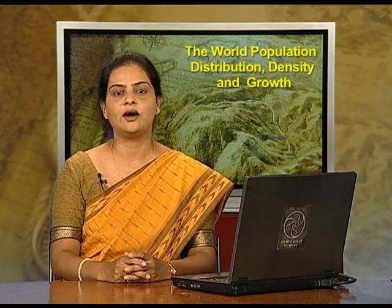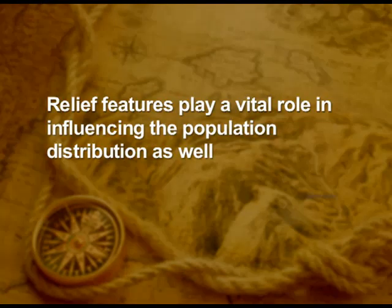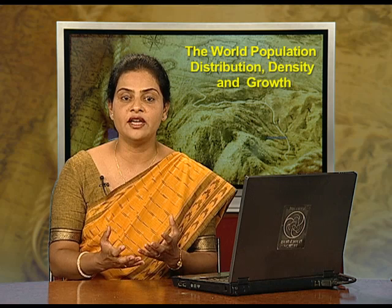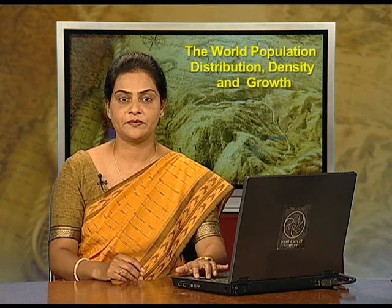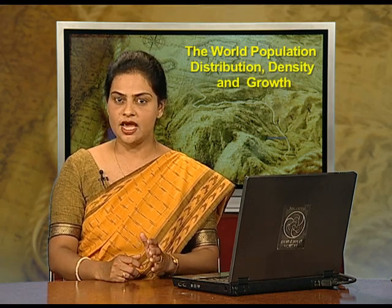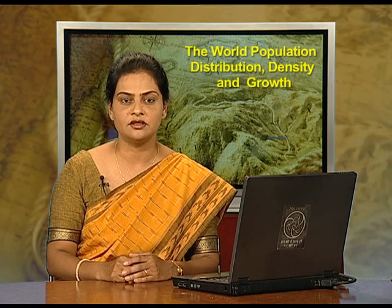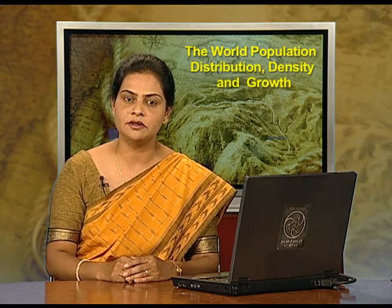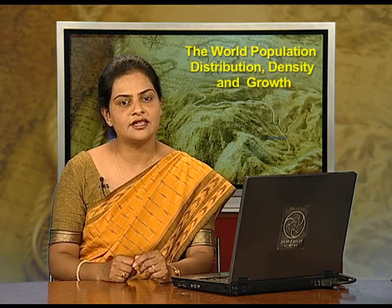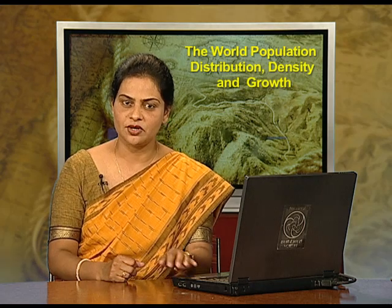Relief features play a vital role in influencing population distribution as well. The main concentration of human population is confined to areas marked by flat topography. The fertile plains always attracted people. In Egypt, 98% of its total population is concentrated forming a ribbon along the Nile river. Mountains and hilly regions do not favour agricultural and industrial development, hence the population is sparse. Hot deserts also repel population concentration.